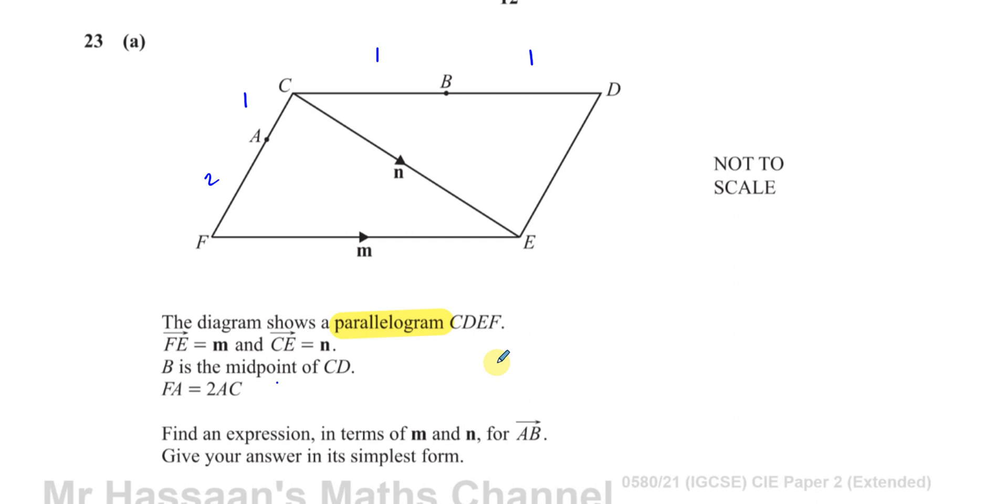It tells us, find an expression in terms of M and N for the vector from A to B. We're going to find the vector from A to B. Now if we look at this diagram, A to B can be found if we know how to go from A to C and then from C to B. So if I can find what A to C is and what C to B is, I can find what A to B is.